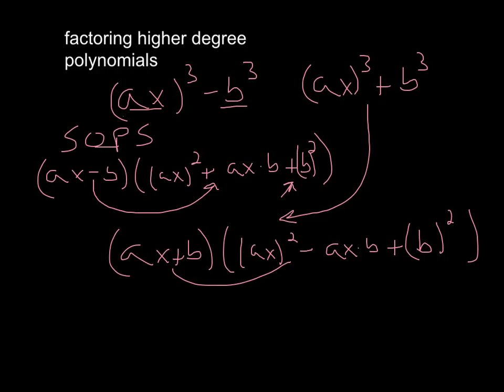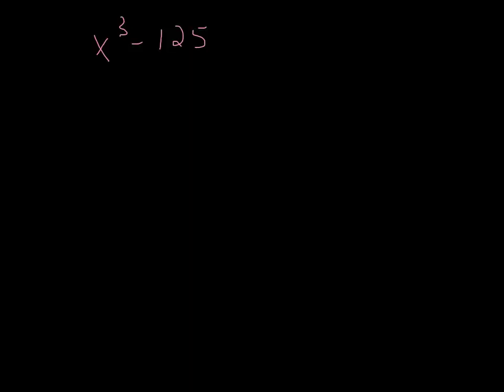So we see we've got x cubed minus 125. Makes it nice and easy. We can see clearly that's a cube. What I always do is I break it down into their houses. What cubed gives me x cubed? Well, it's x. And what cubed gives me 125? Well, that's five.